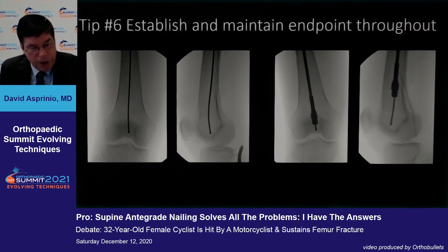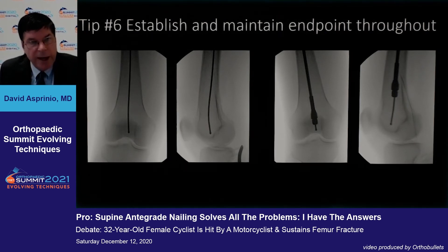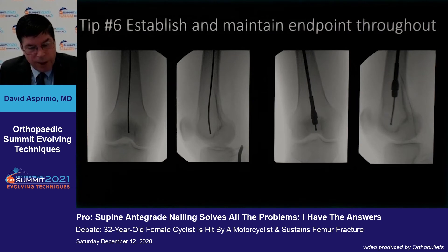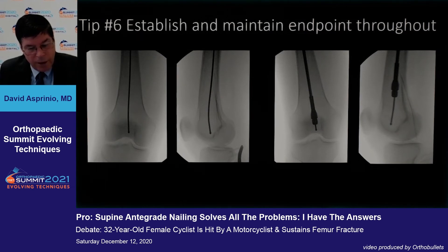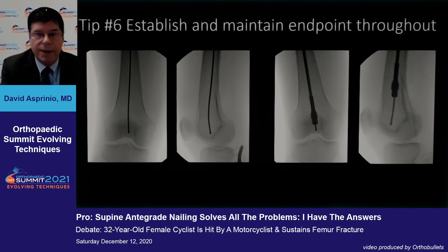The sixth important step is to ensure an appropriate central endpoint is identified and maintained throughout. The femoral intramedullary canal is linear in the coronal plane, and establishing a correct entry point and endpoint will generally restore alignment, though treatment of some distal one-third fractures may require placement of a blocking screw or screws to maintain alignment.